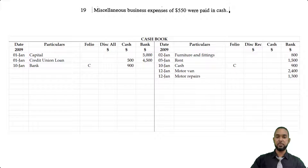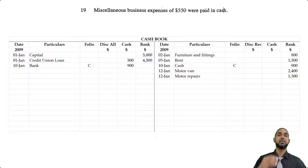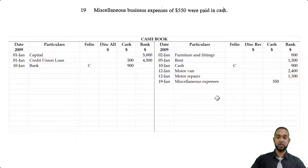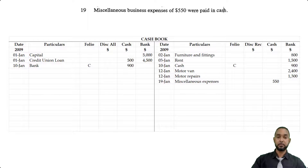On the 19th, we see miscellaneous business expenses of $5.50, paid in cash. We're making a payment out of cash, which means cash is decreasing. To record a decrease in an asset, you have to credit the asset account. So on the credit side of the cashbook under the cash column, you're going to see $5.50, and in the details column you'll see miscellaneous expenses, because that is what we paid.